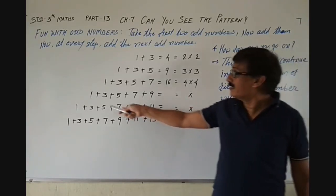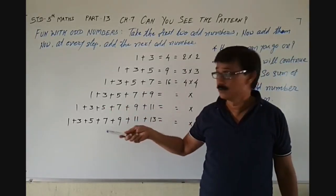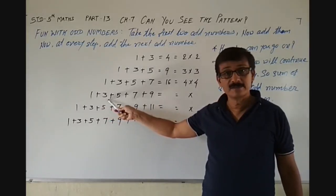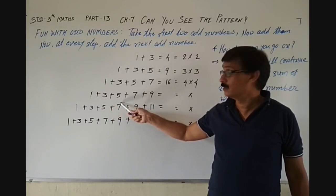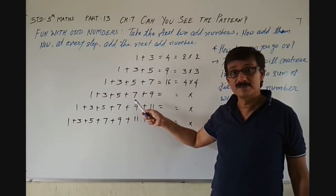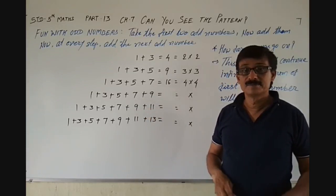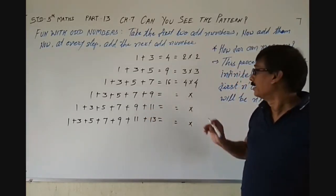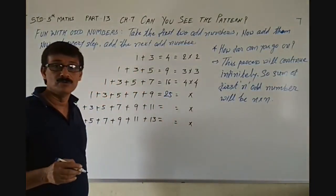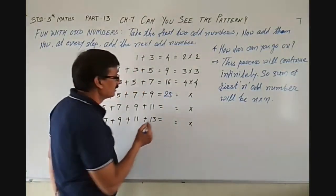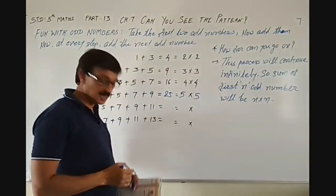Can you add these numbers quickly? 1 plus 3 plus 5 plus 7 plus 9. It is 25. And what is 25? 25 is 5 multiplied by 5.